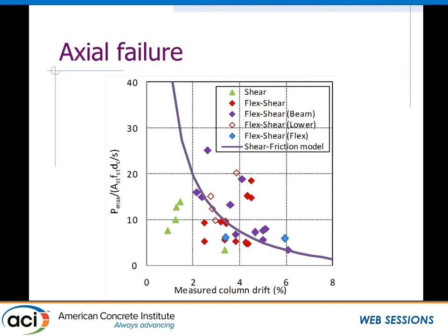Comparing that axial failure drift to the shear friction model — one of the models Wasim referred to — without the curve you'd say there's no trend at all, but perhaps the curve makes you think there is one. It's perhaps alright for flexure-shear cases but certainly not good for pure shear failure cases. That model was developed for flexure-shear, so that's not entirely surprising. But it means we need to pay attention to these pure shear failure cases in terms of their drift to axial failure.